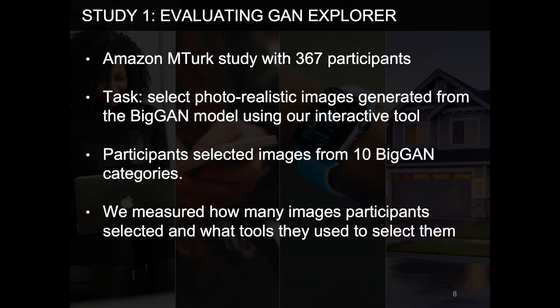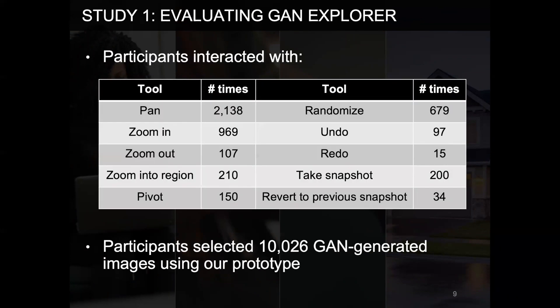In the first study, we recruited 367 participants on Amazon Mechanical Turk and asked them to use our interface to select photorealistic images generated using an existing GAN model called BigGAN. Participants selected images from at least one of 10 BigGAN categories, for example, punctual, cub, and butterfly. We measured how participants used our prototype to explore the GAN. The results showed that participants were able to select over 10,000 photorealistic images by interacting with different tools in our interface.